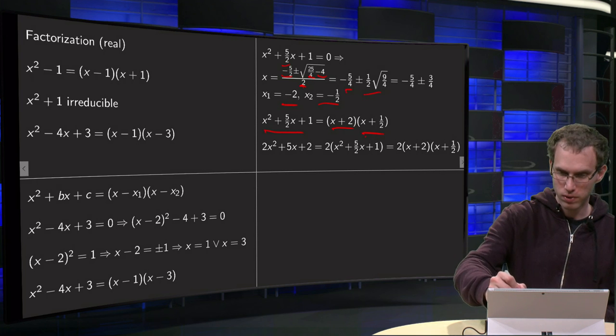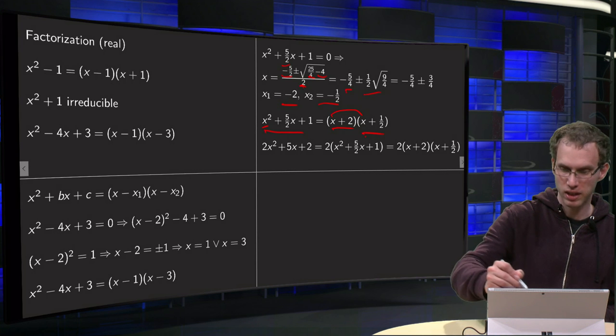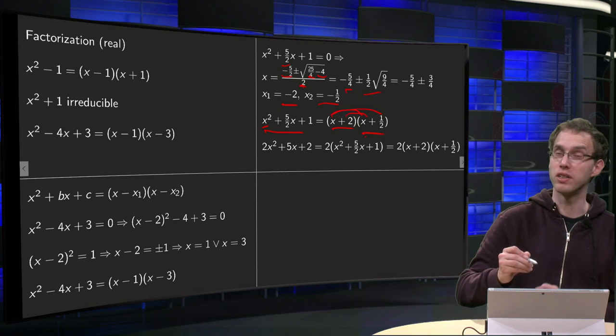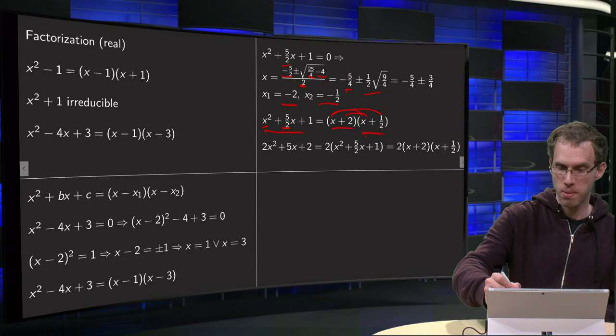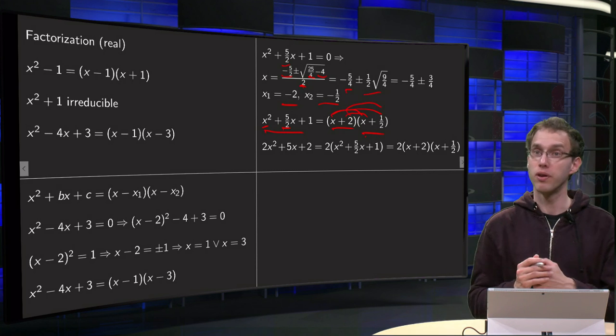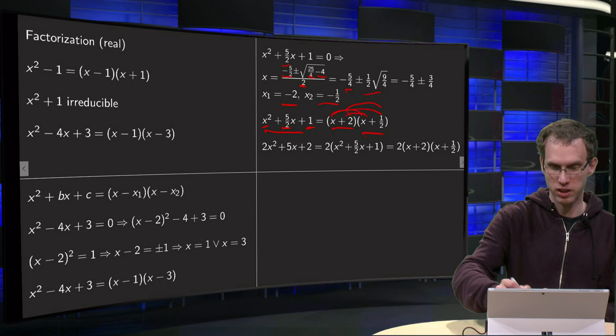Always check of course, and we get an x², check, plus 1/2x + 2x, so that equals 5/2 times x, plus 2 times 1/2 = 1, so that's indeed correct.